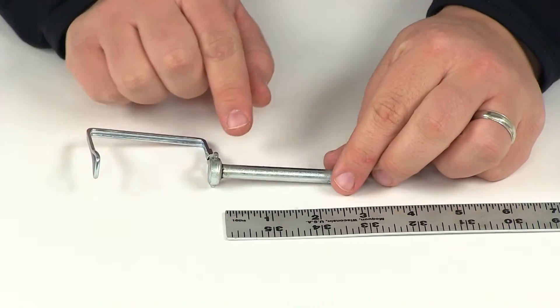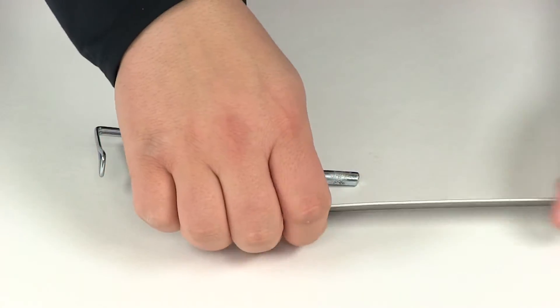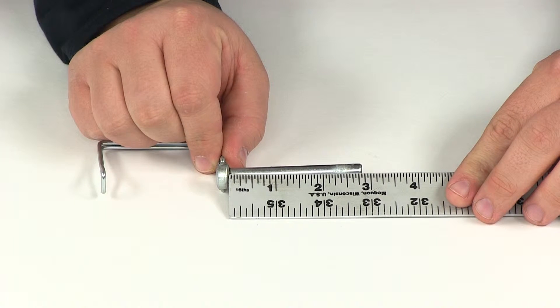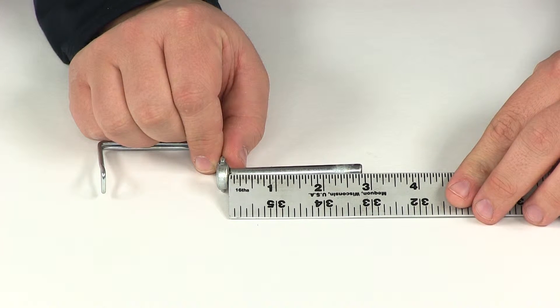If we measure from the bottom of that collar to the end of the pin, that's going to give us a measurement of two and thirteen sixteenths of an inch.